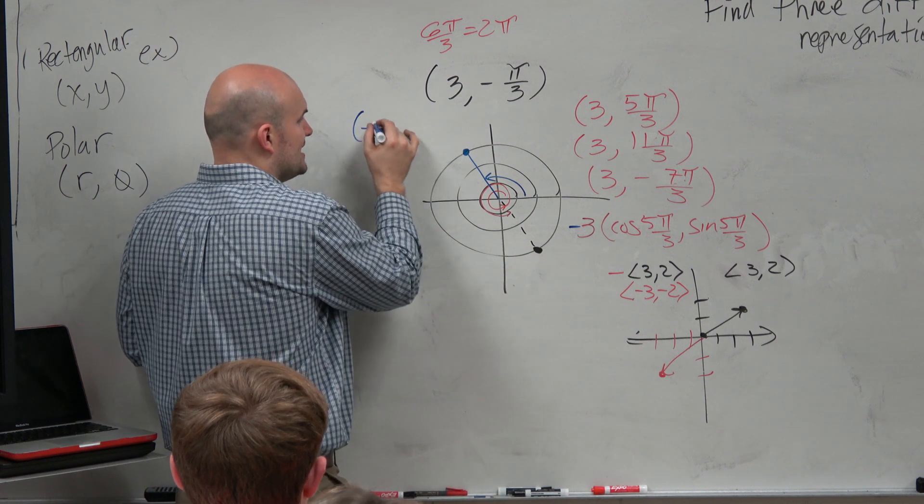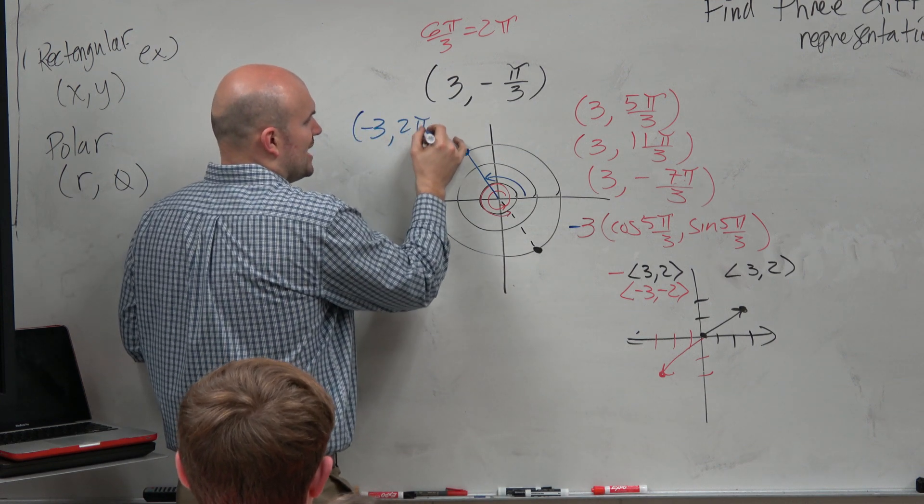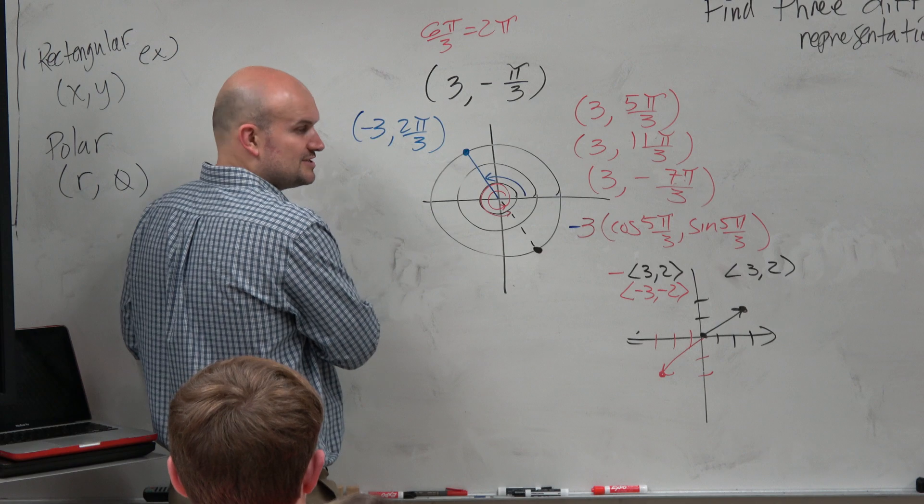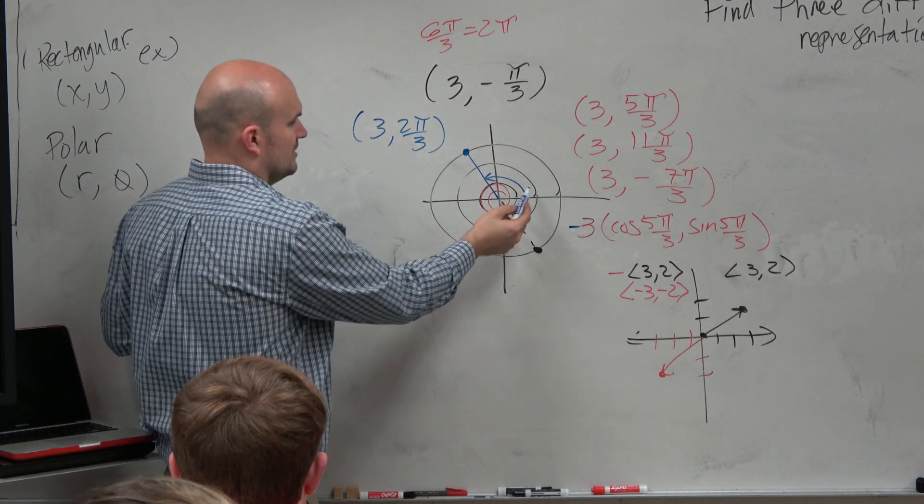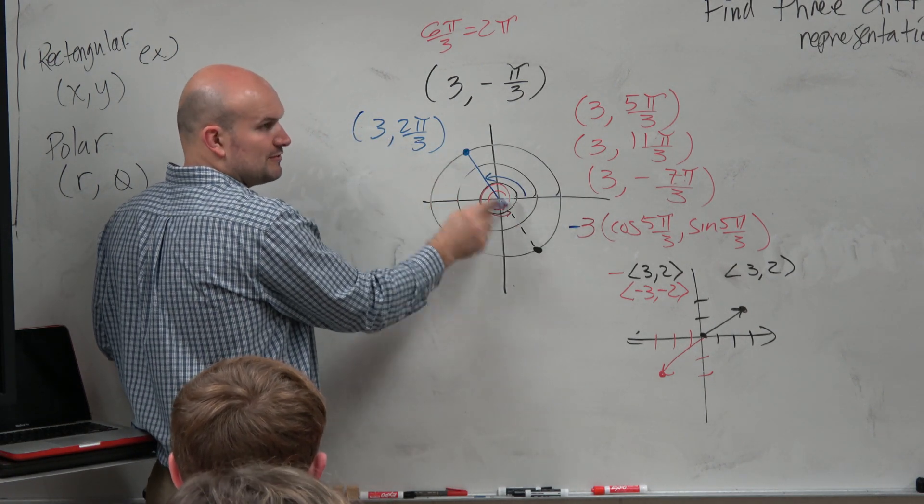So what is this angle? 2 pi over 3. So if I wrote negative 3, 2 pi over 3, that is another representation. Again, think about it. Forget the negative for a second. Would you guys agree that that is 3, 2 pi over 3? Right there.